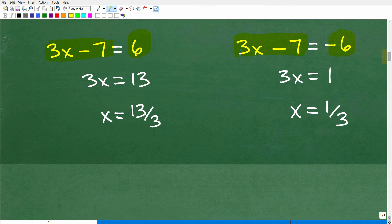And then we're going to go ahead and solve these respective equations. So here, I'm going to go ahead and add 7 to both sides of the equation. I get 3x is equal to 13. And I'm going to go ahead and divide both sides of the equation by 3. So I get x is equal to 13 over 3. That's one solution.